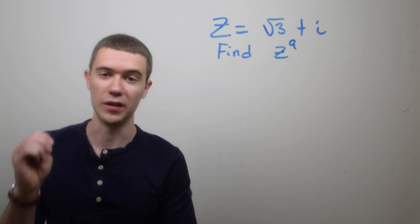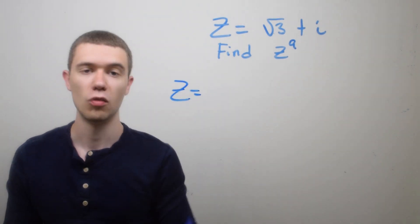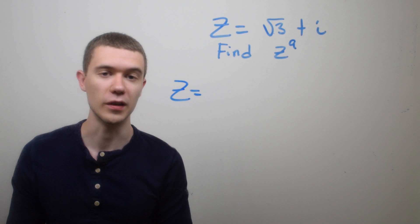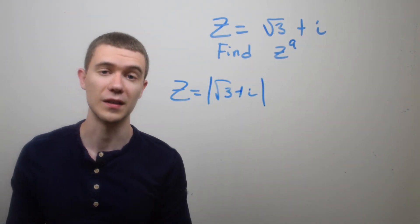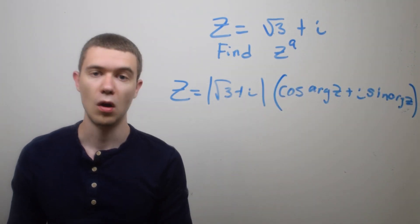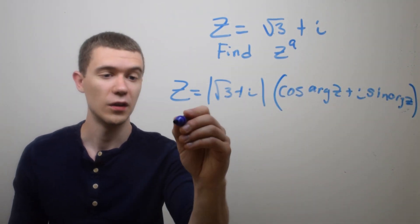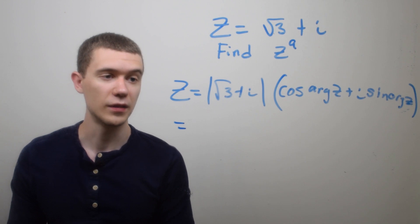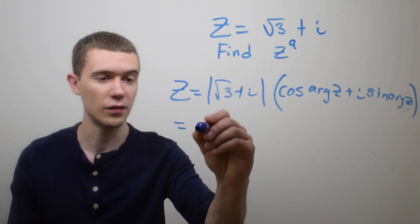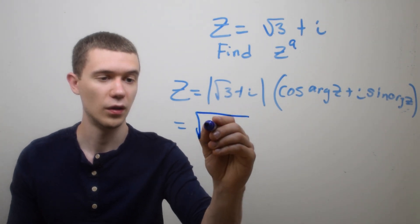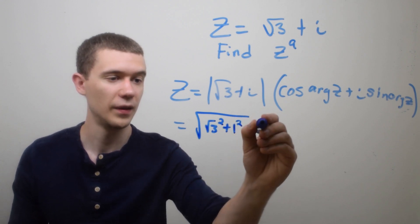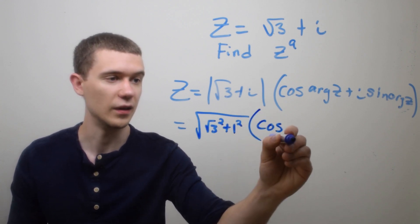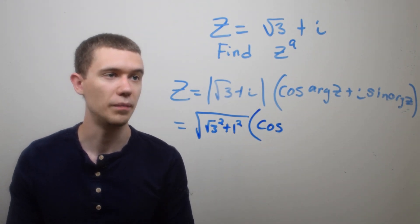I need to start by writing this number in its polar form. Remember that means r, which is the modulus of z, times (cosine θ + i sine θ), where θ is the argument of z. So here the modulus of √3 + i, remember that's just the square root of the sum of the squares, so this is √((√3)² + 1²) times cosine. Well let's see, what would the argument be?